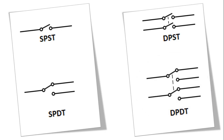A momentary double pole double throw switch requires the switch to be pressed or held continuously for the operation to work. When it is released, the switch will stop — for example, the switches on your keyboard; when they are released, they no longer operate. A latching switch will stay on or off until it is pressed again, for example a light switch.